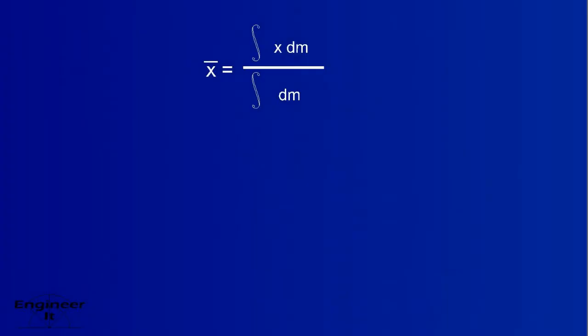The center of mass will tell us exactly where it's at. The resultant is thought of as the center of mass of the distributed force. We know that dm is equal to the density multiplied by dv, but that's a constant in both integrals, so it drops out of the equation.